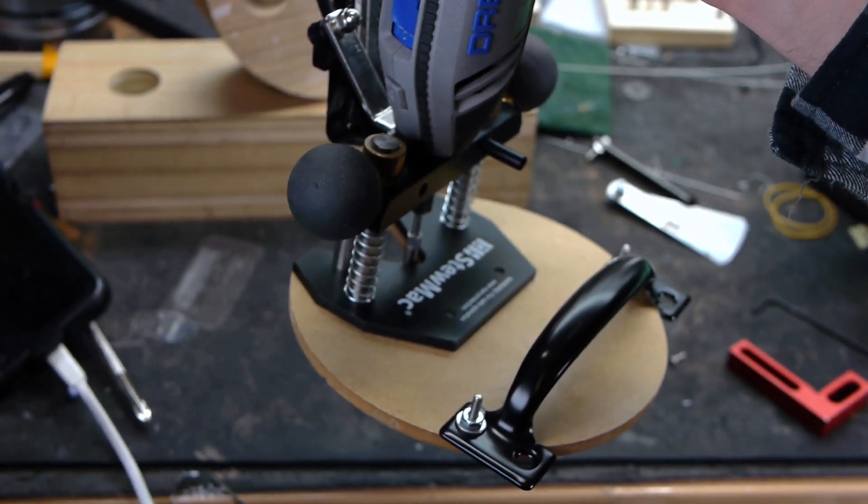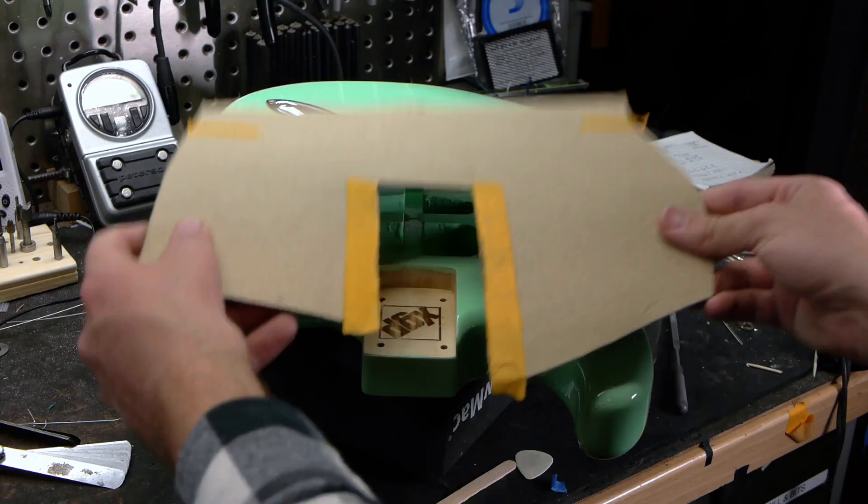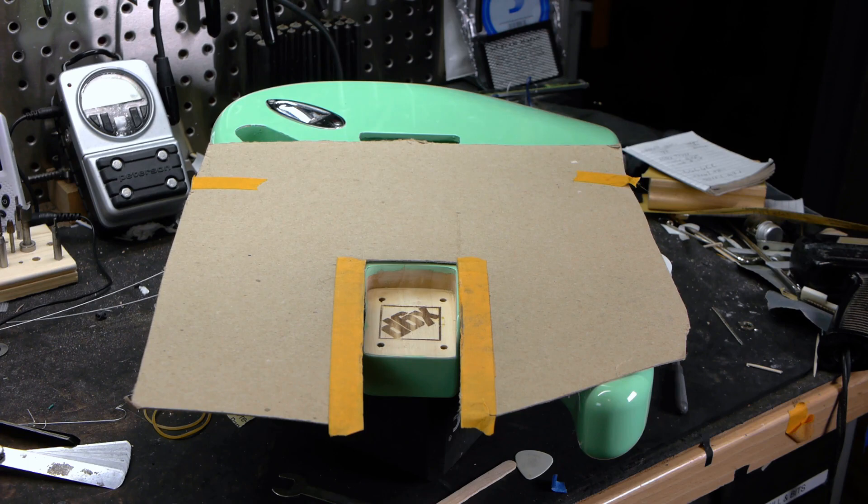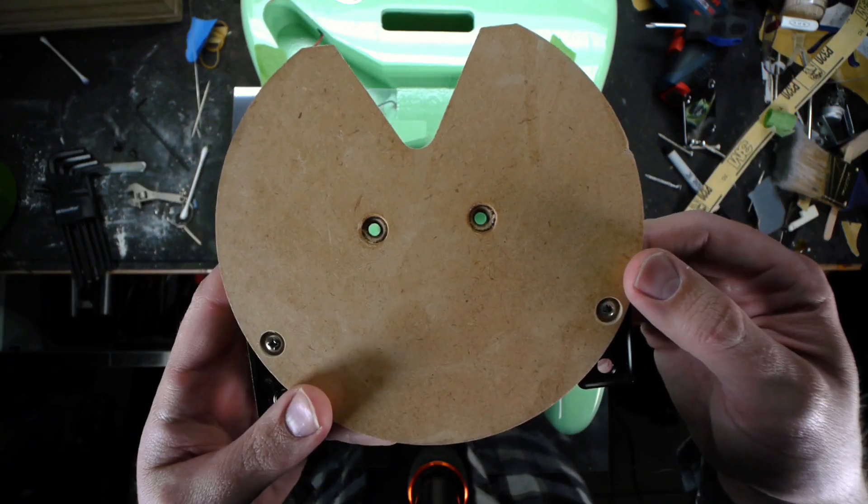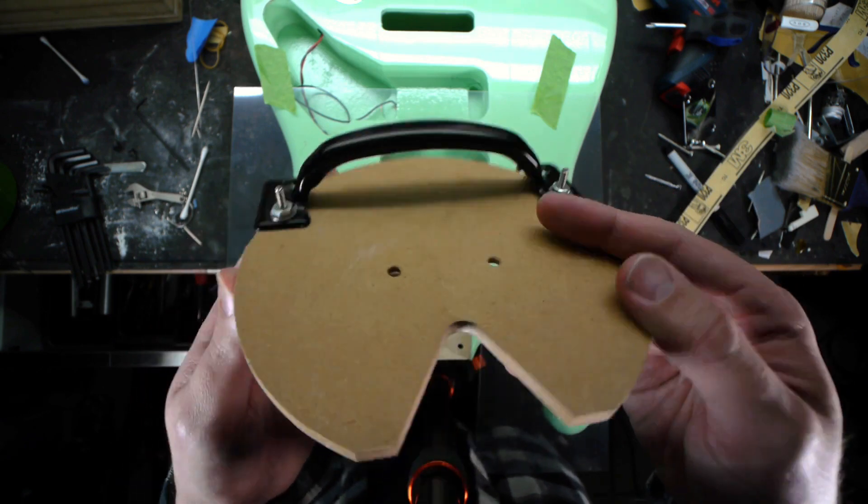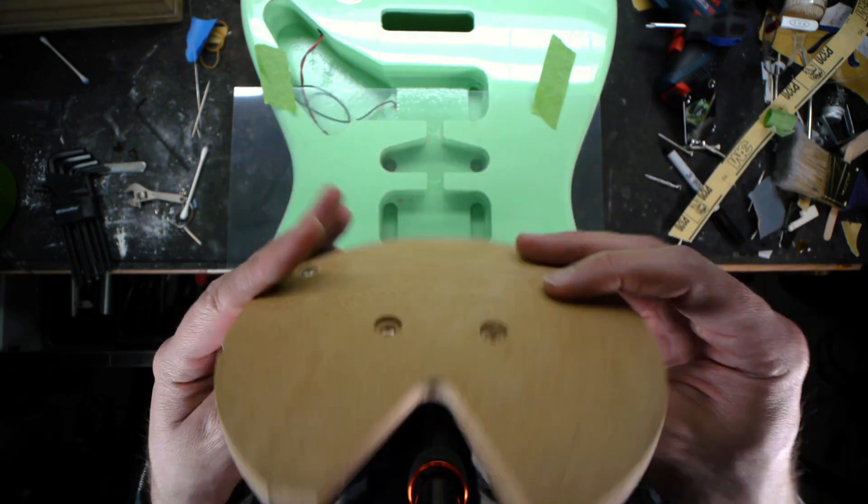With some RAM board cut to size to protect the guitar and for the router base to ride on, let's look at why this router base works. The base is circular and has a handle attached to the back end for a solid, stable grip, which is extremely important.